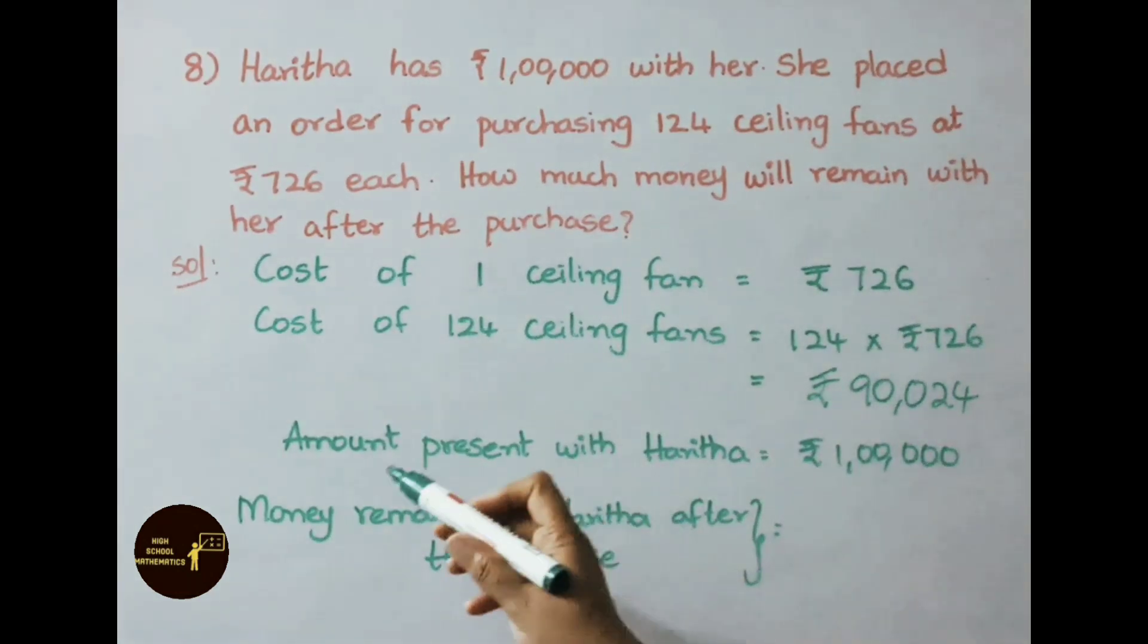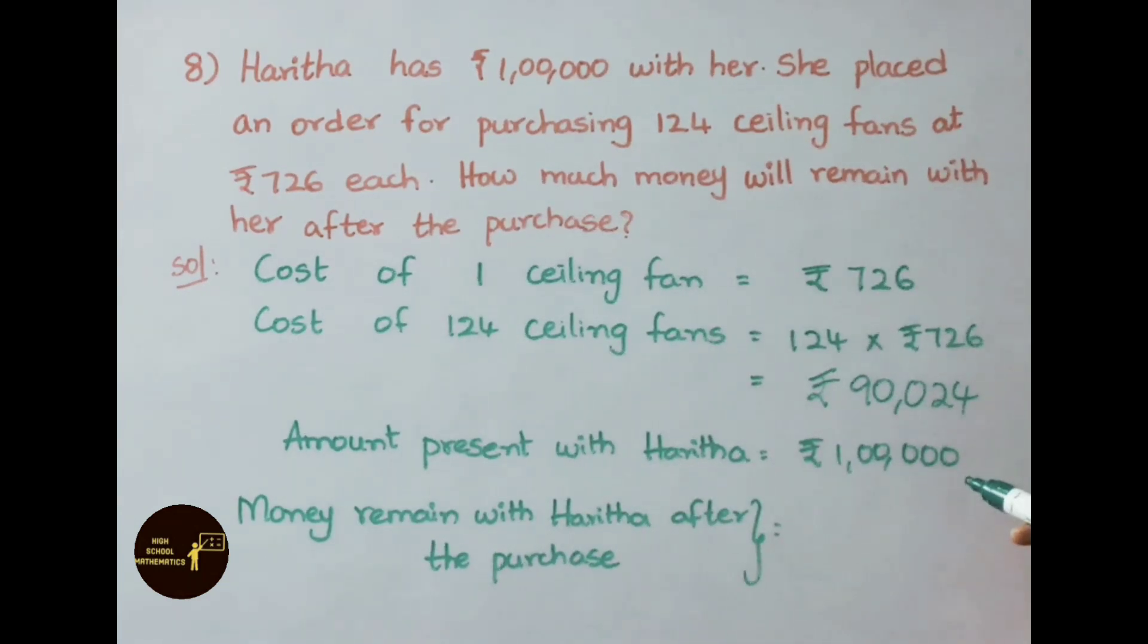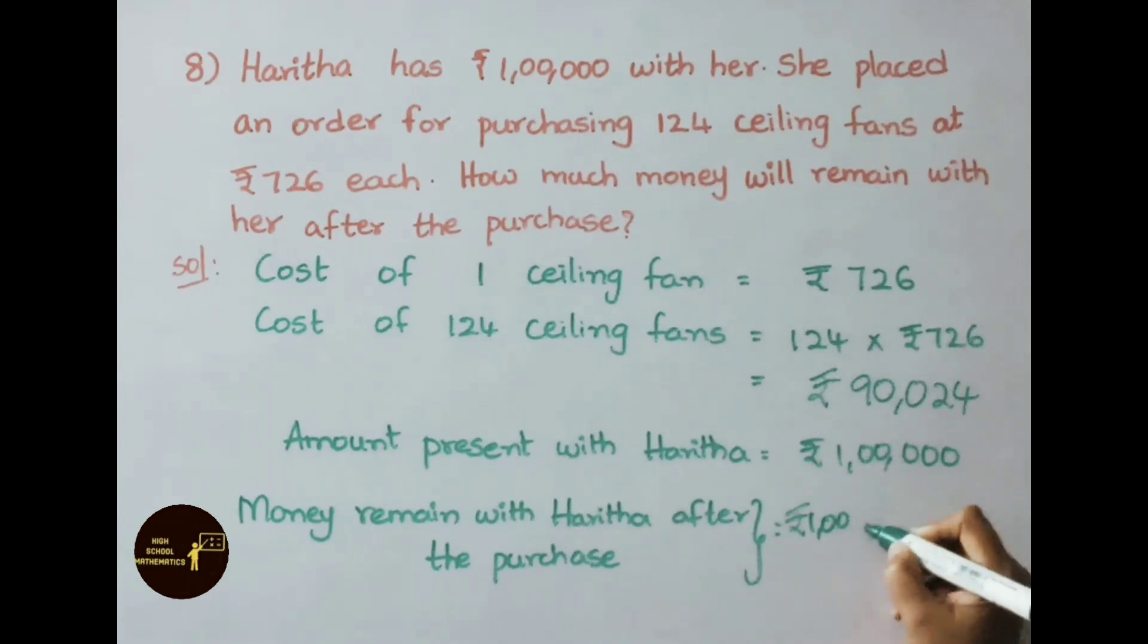See now. Amount present with Haritha, that is 1,00,000 rupees. We need to find money remaining with Haritha after the purchase. That means 1,00,000 rupees minus 90,024. We need to subtract. So I am borrowing here. 10, remaining digits were 9, and last digit 0.